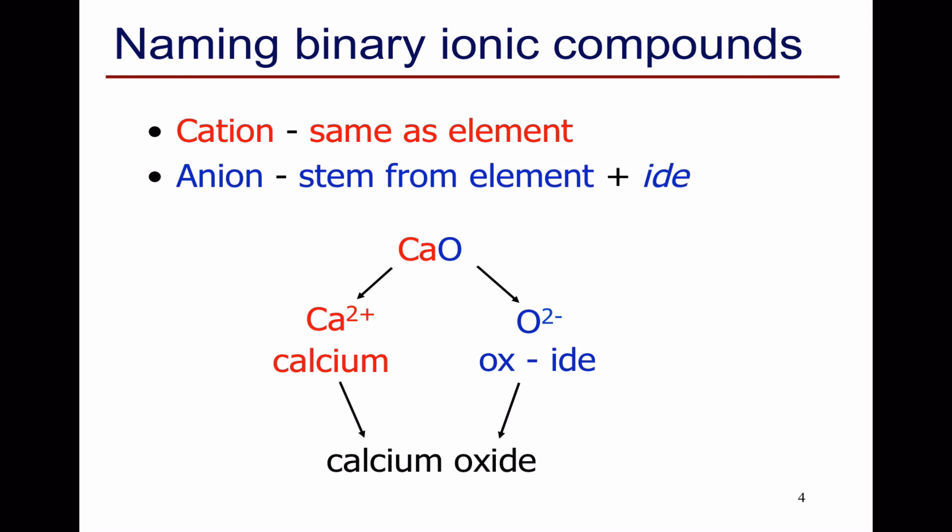CaO. The cation is calcium, and the anion is from oxygen. We take the ox and add "-ide" to get oxide. Calcium oxide.